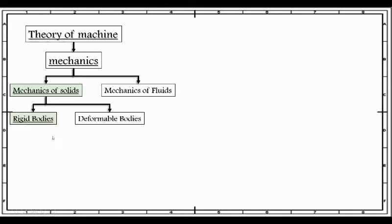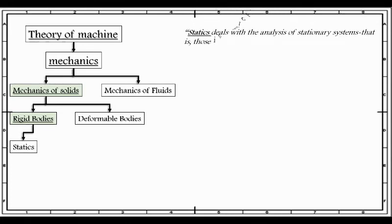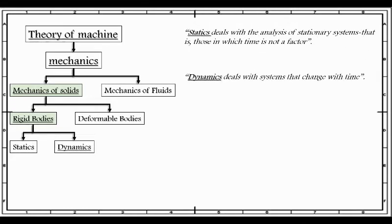The rigid bodies can further be classified into two categories. One is statics. Statics deals with the analysis of stationary systems, that is those in which time is not a factor. And second one is dynamics. Dynamics deals with the systems that change with time.